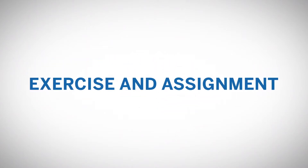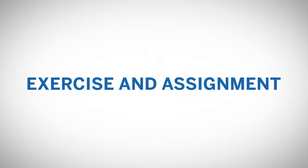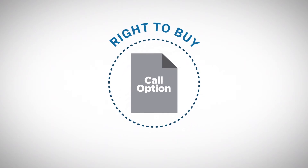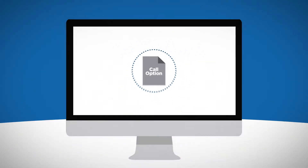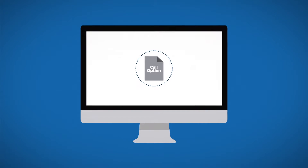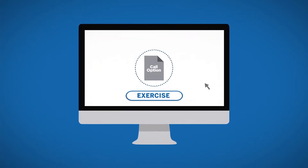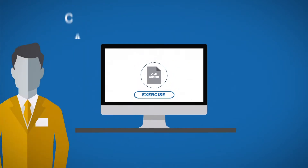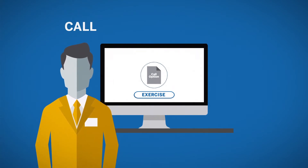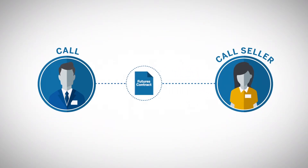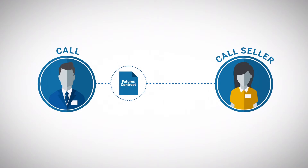What does it mean when an option is exercised or assigned? A call option is the right to buy the underlying future at the strike price. The process for activating that right is called exercising the right, or simply to exercise the option. The term call actually tells us what direction the underlying instrument will move — for a call option, that activity is referred to as calling the underlying away from the option seller.